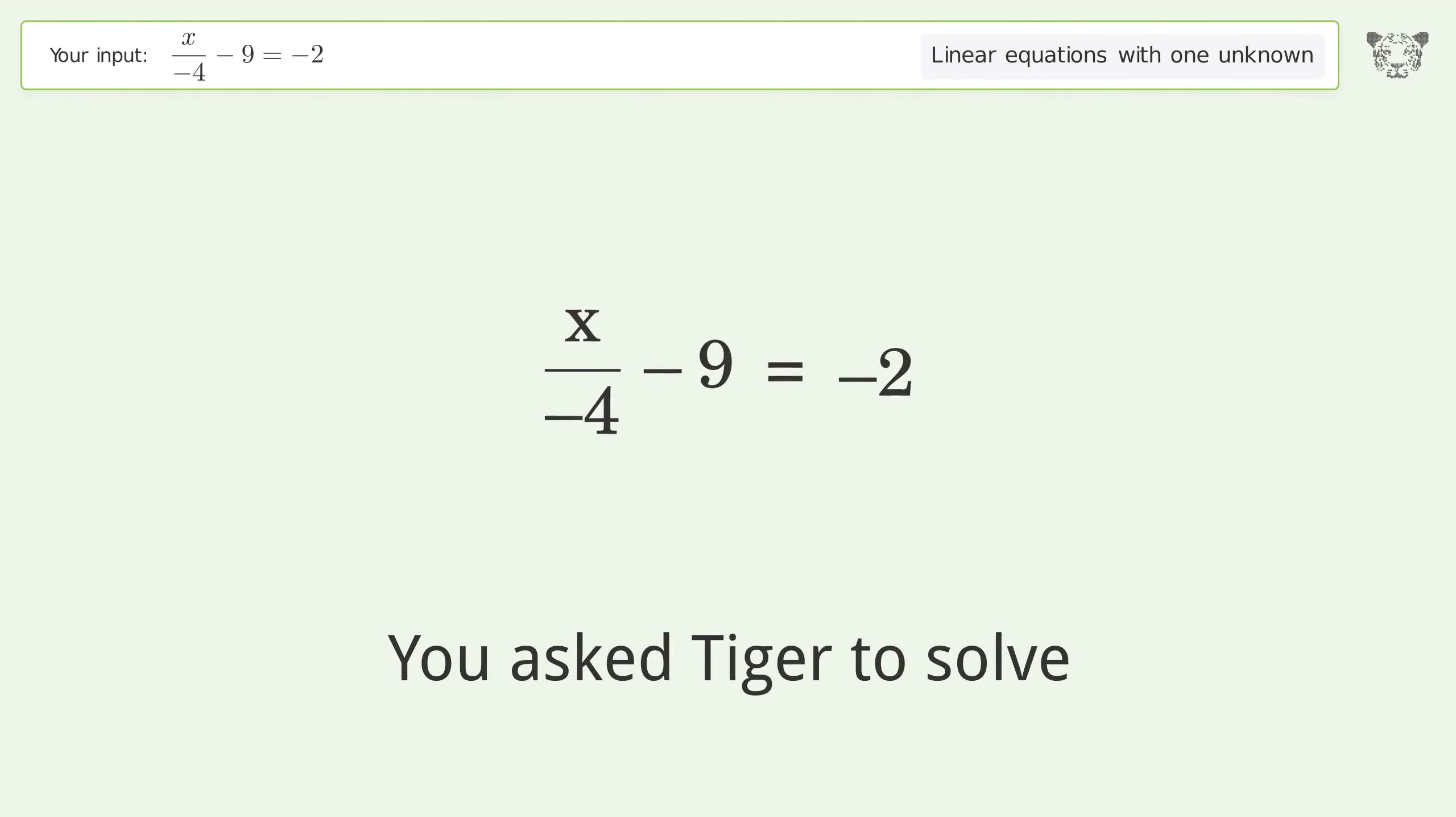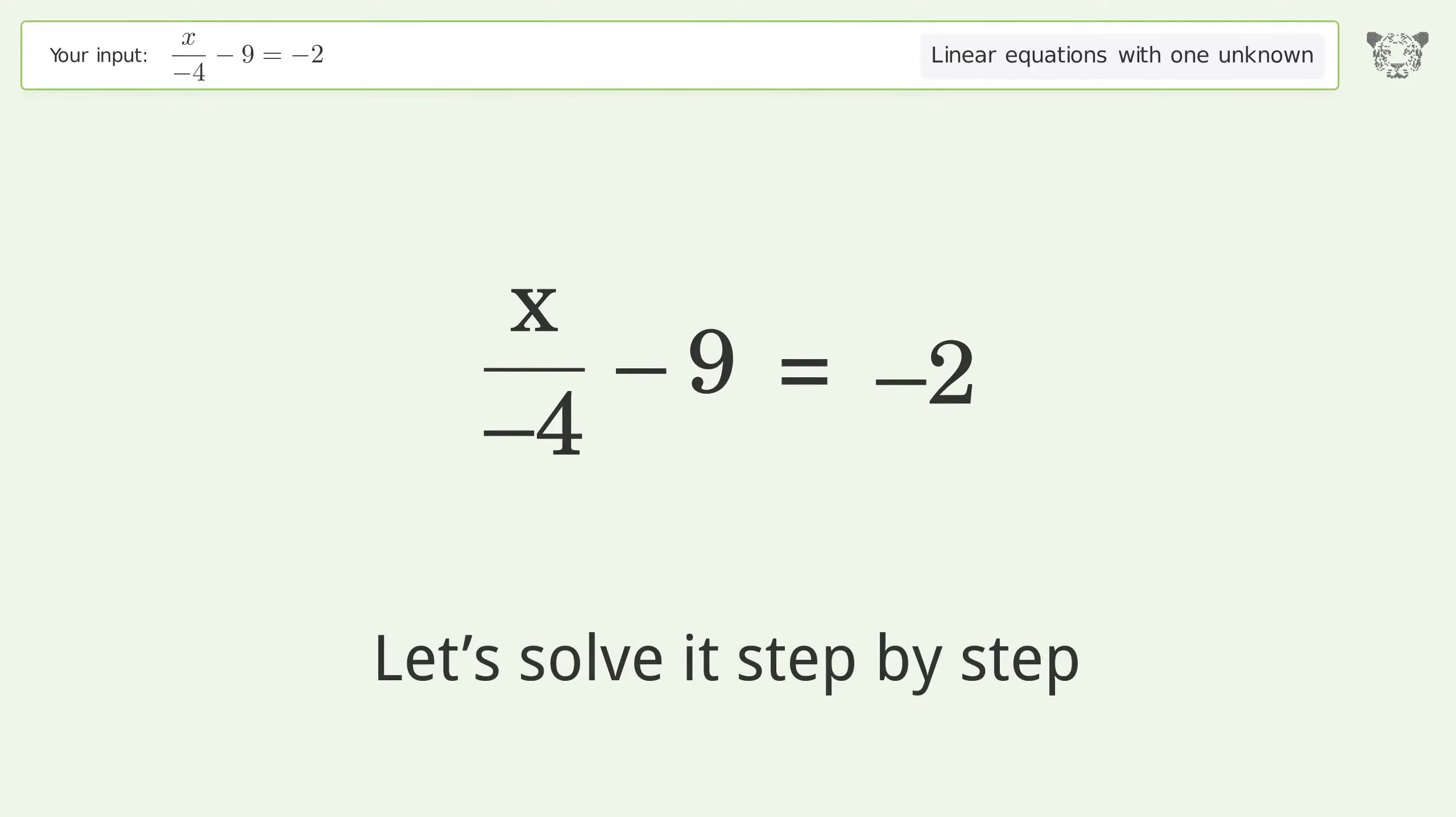You asked Tiger to solve this. It deals with linear equations with one unknown. The final result is x equals negative 28. Let's solve it step by step.